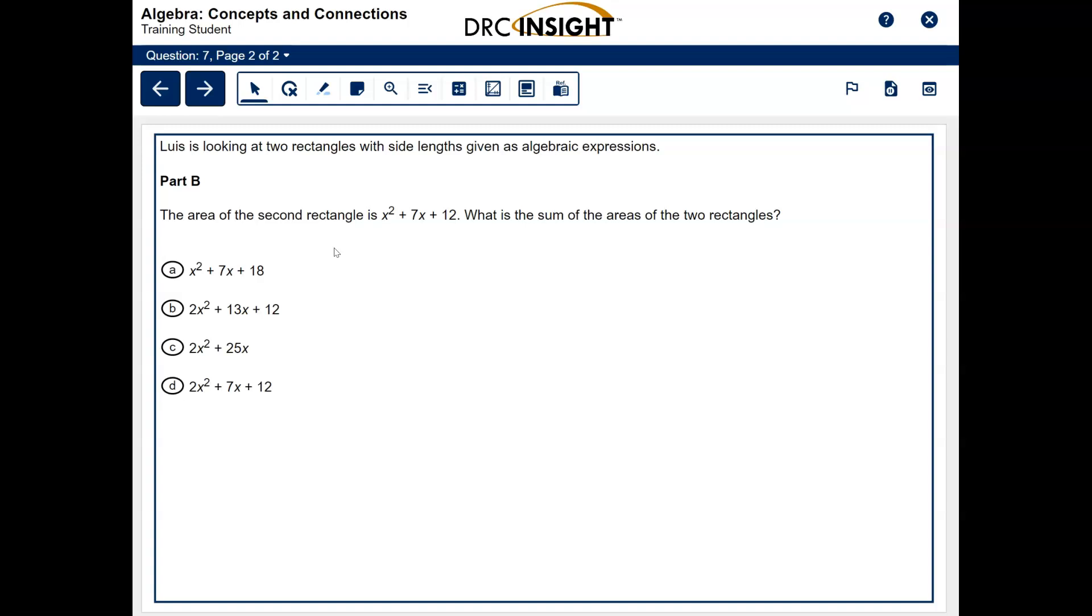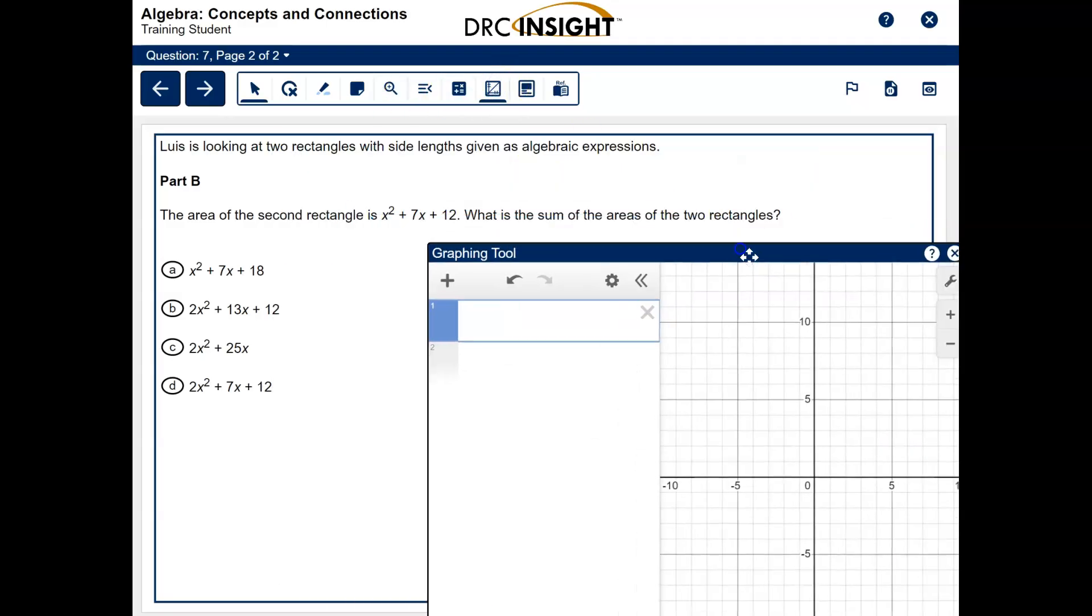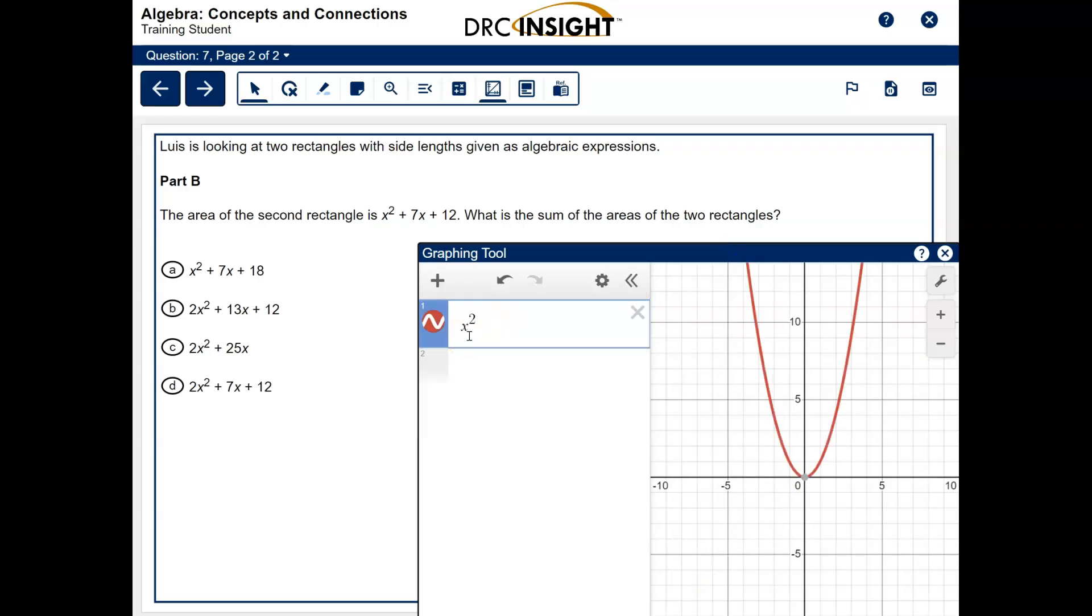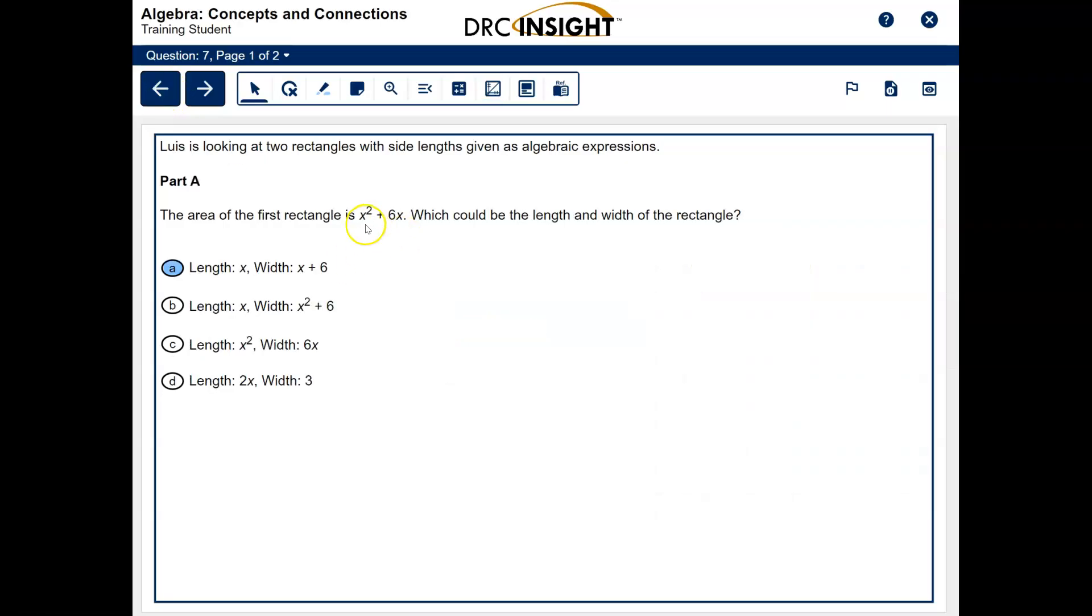We're still on question 7, and we've gone to the next page. So this is a different expression. We're going to go ahead and use the graphing tool to graph this expression. So x squared plus 7x plus 12. It says the area of the second rectangle is x squared plus 7x plus 12. What is the sum of the two areas? Well, unfortunately, I didn't write down the first area. So before we can do this problem, I'm going to go ahead and copy this, control C. I'm going to go back to the last problem and get that answer. Remember I said you had to write this down? This is exactly what I meant, x squared plus 6x.